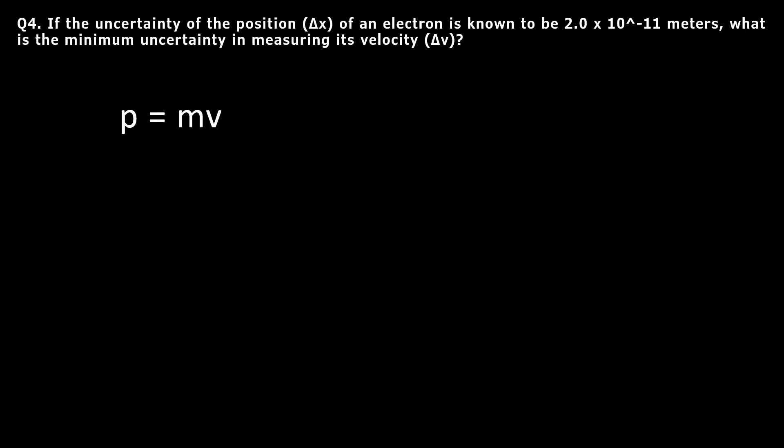...we can find the uncertainty of velocity (Δv) by rearranging this equation to get Δv equals Δp over m.